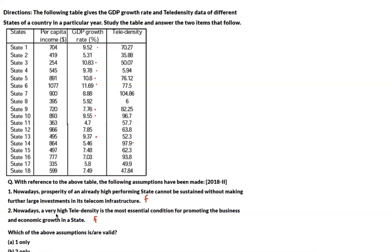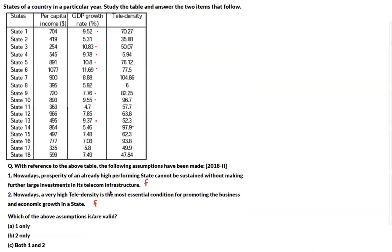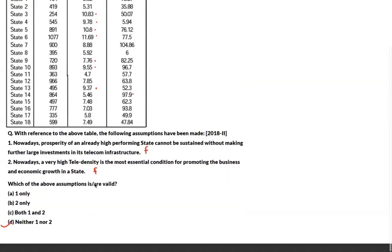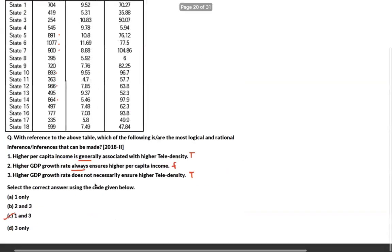Statement 2 says high tele-density is the most essential condition for promoting business and economic growth. This is an extreme absolute statement; general reasoning and the data both show we cannot conclude this. Both statements are incorrect or invalid.